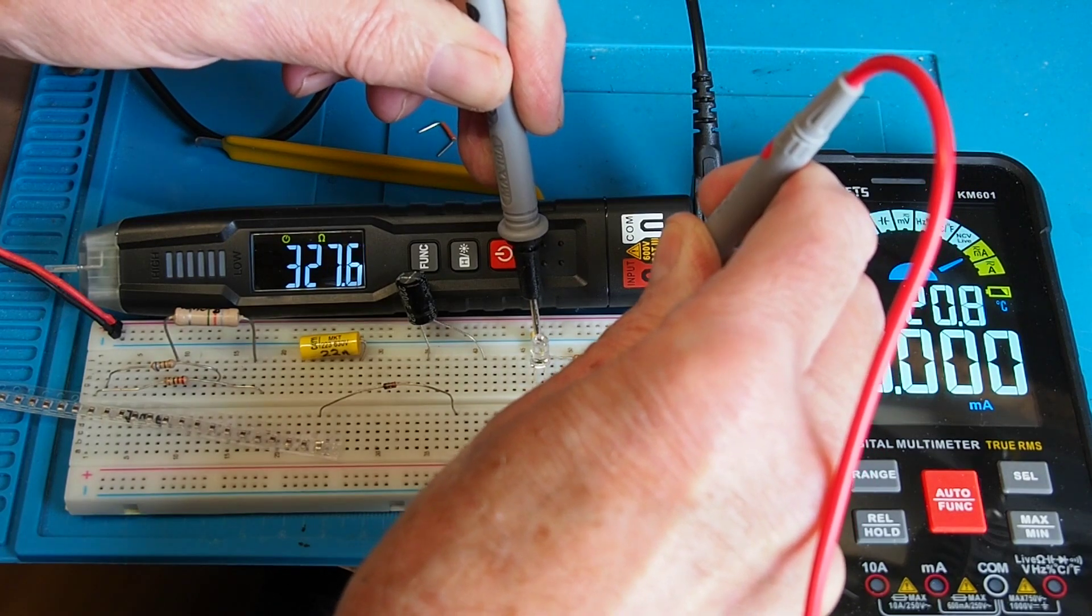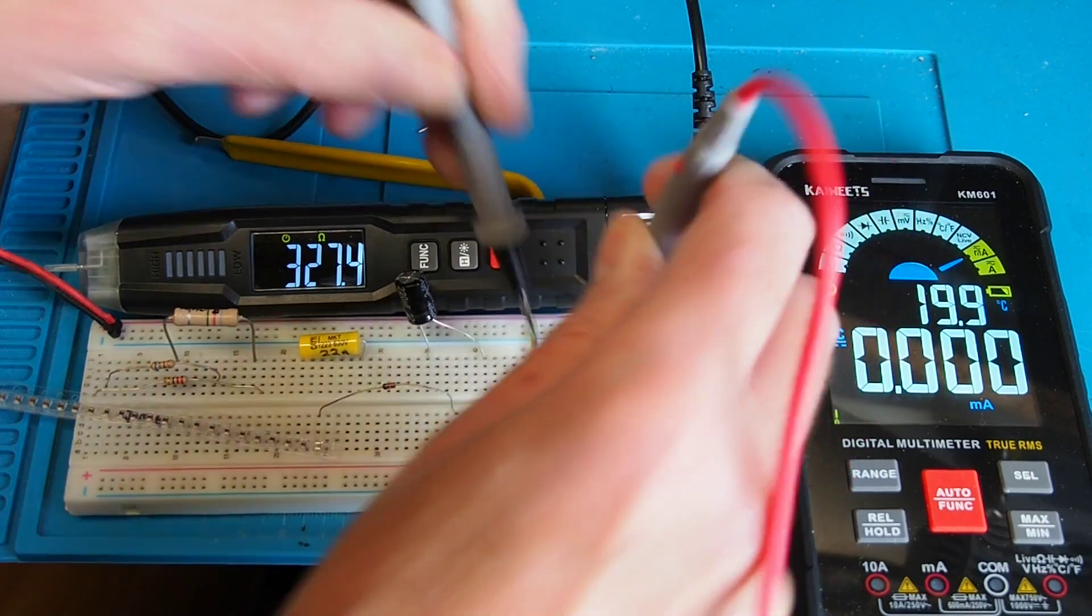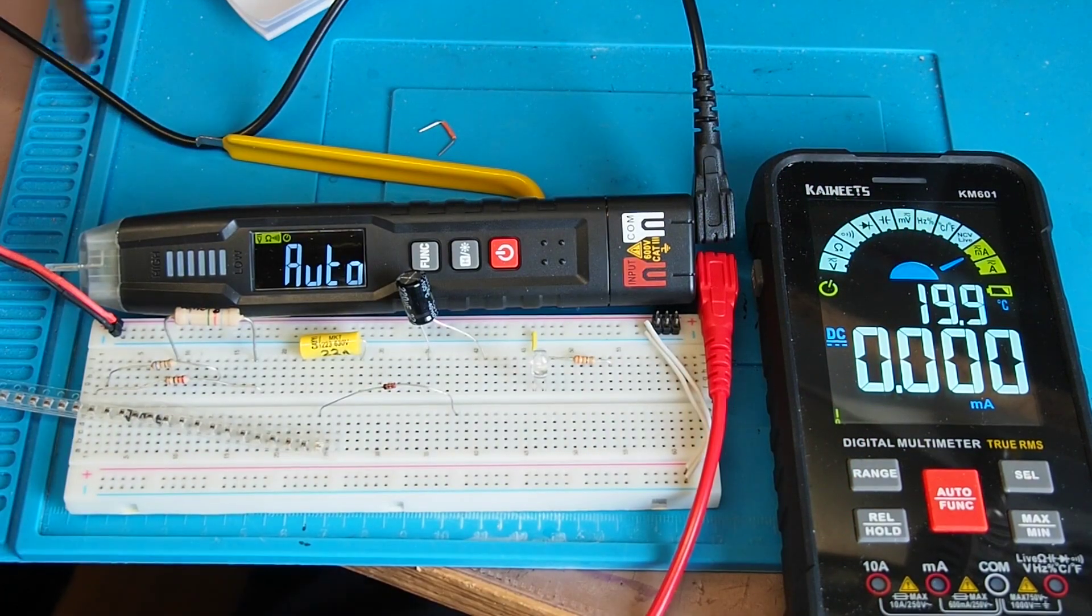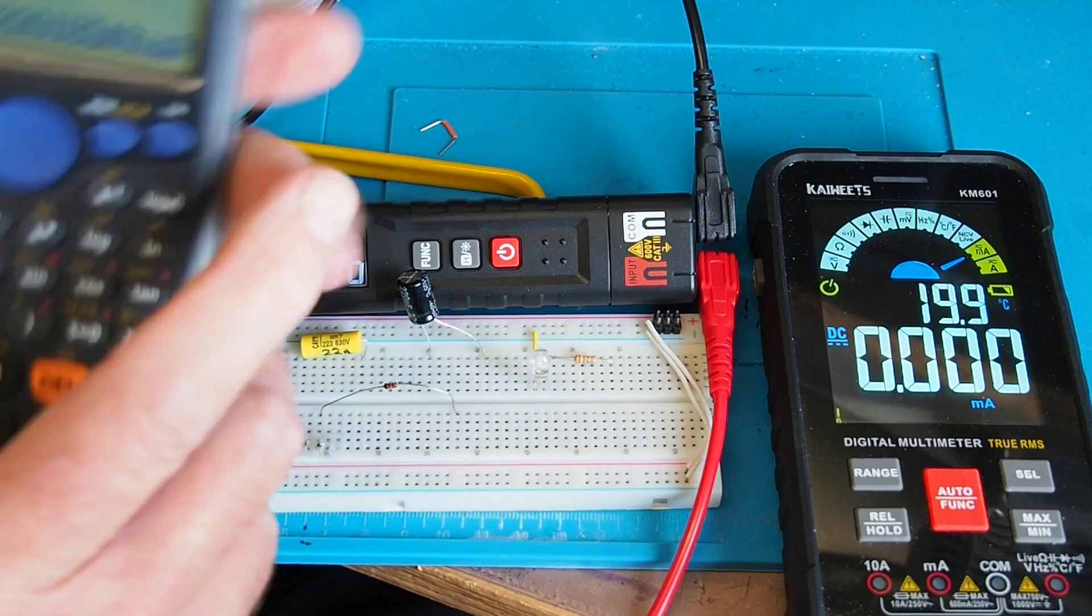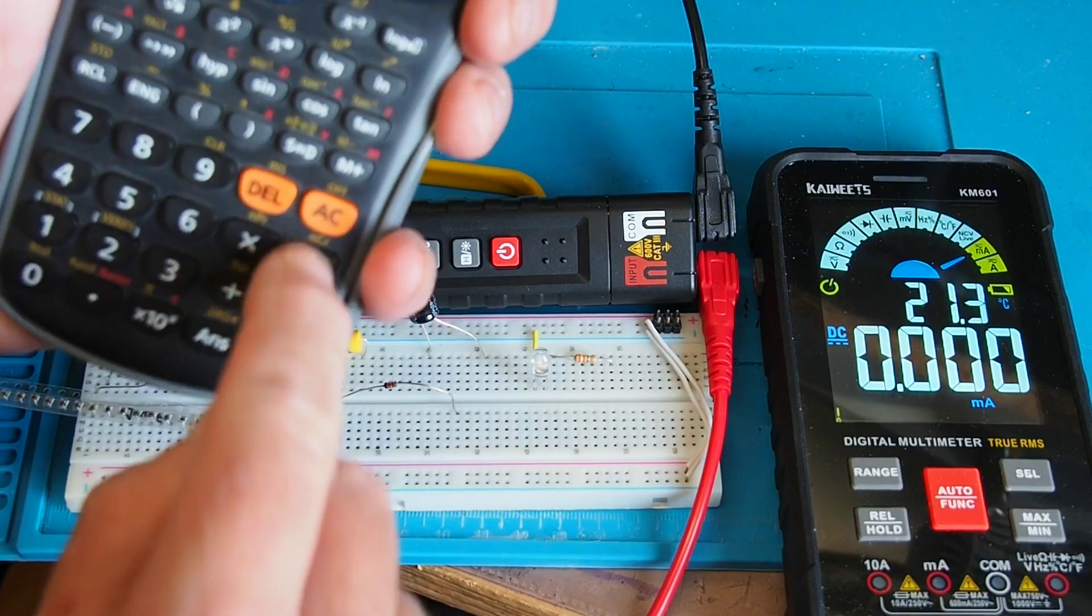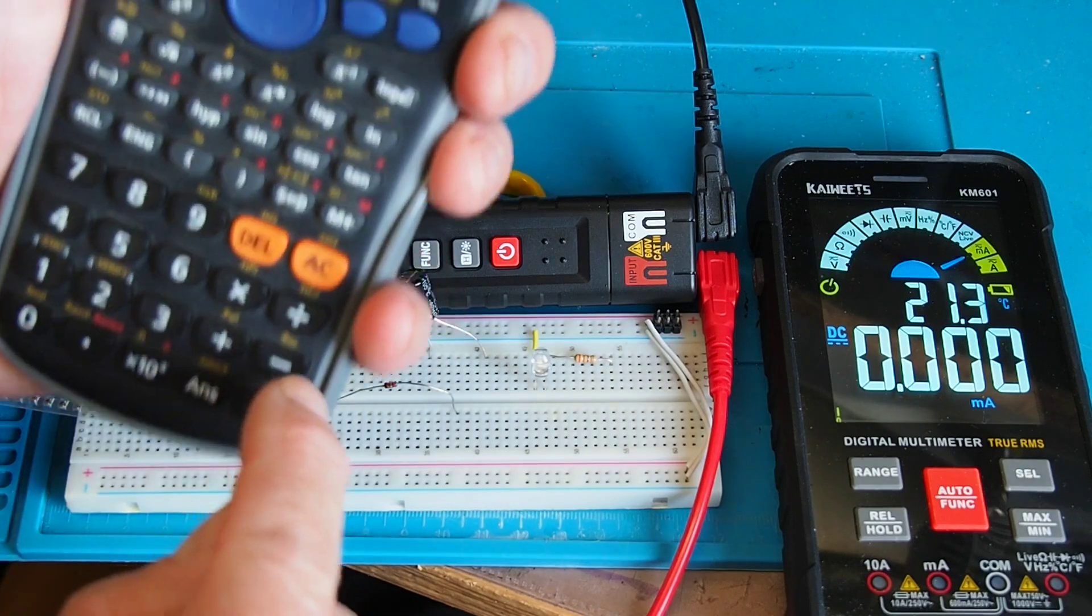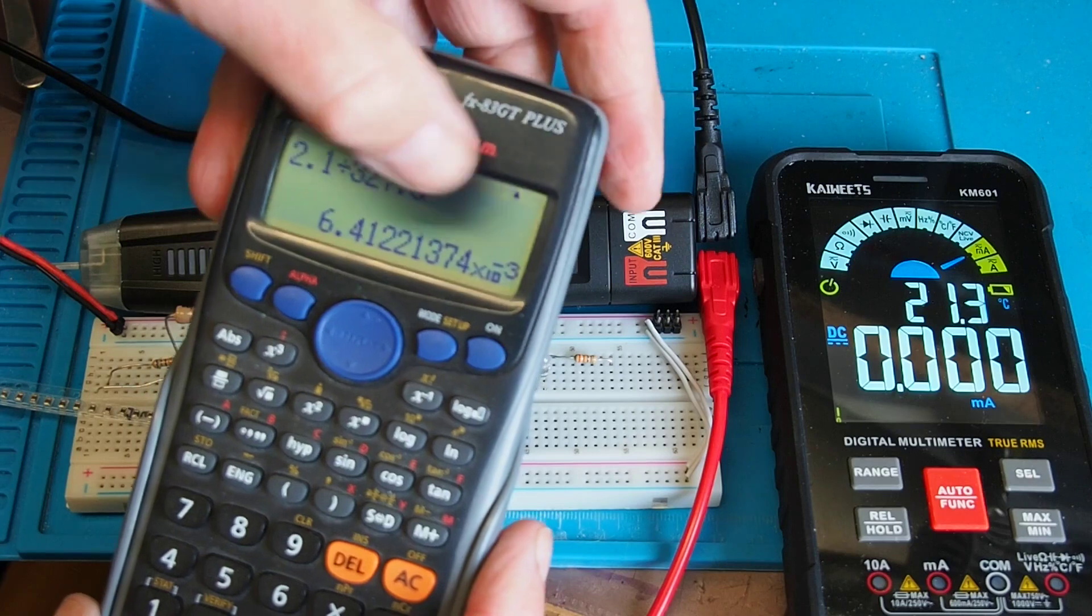That's coming up at 327.5 ohms. I'm sure you know what's coming next. If we divide the voltage 2.1 by the resistance 327.5, that should give us the current.